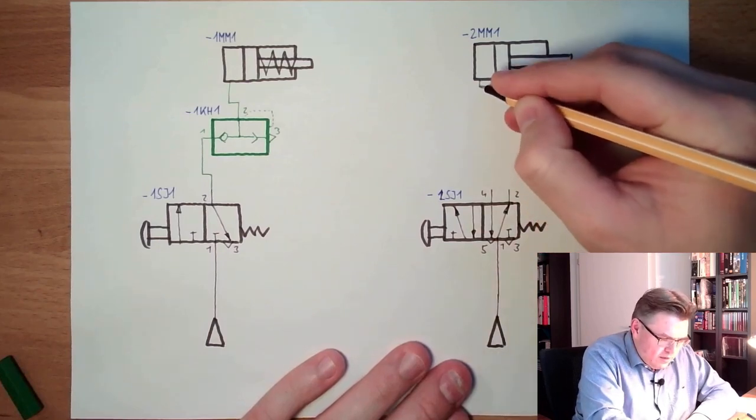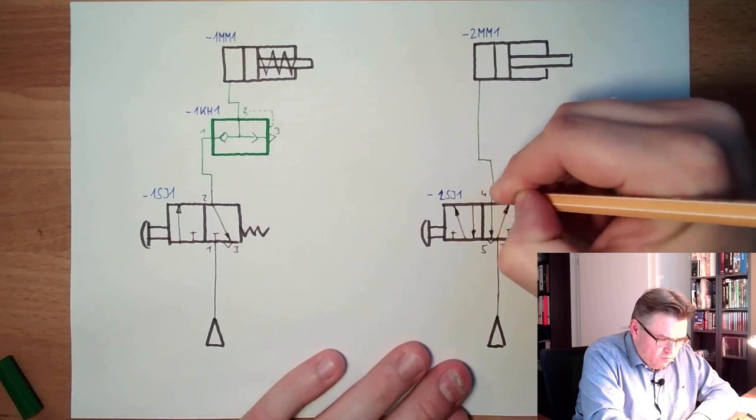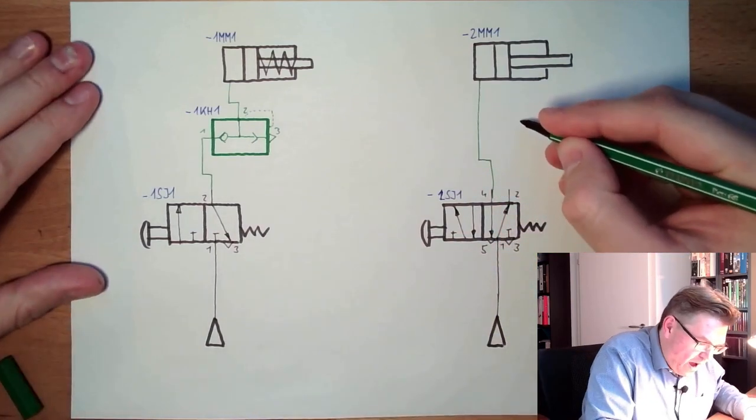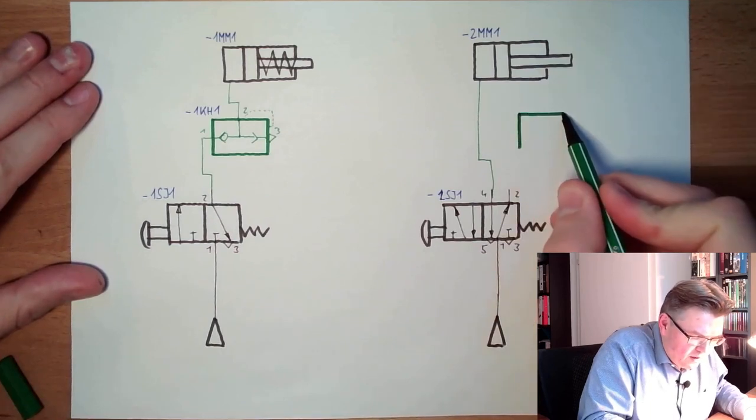So inside, I'm simply connecting to four. And out, I am adding this quick exhaust valve here.